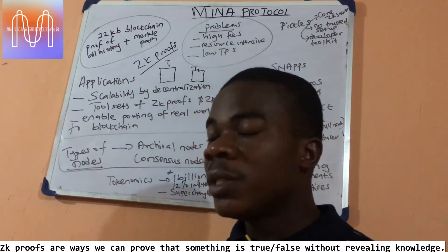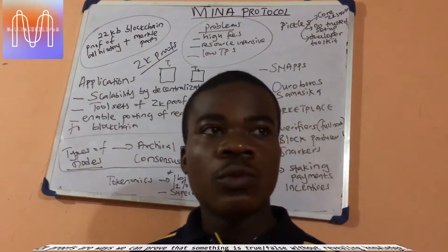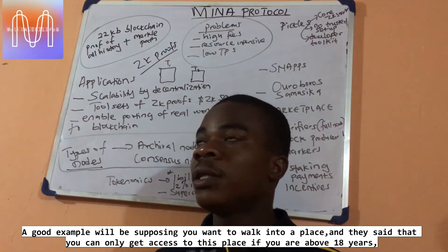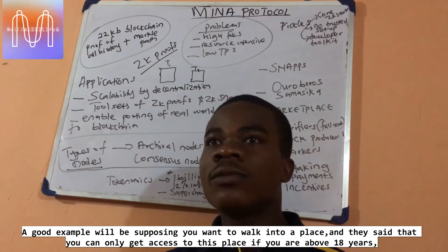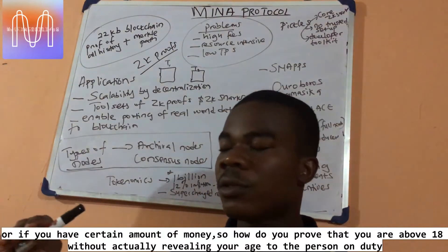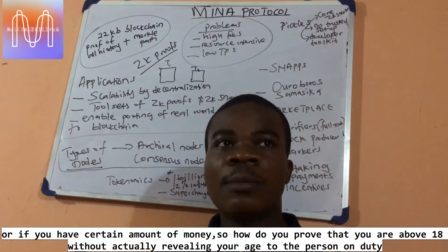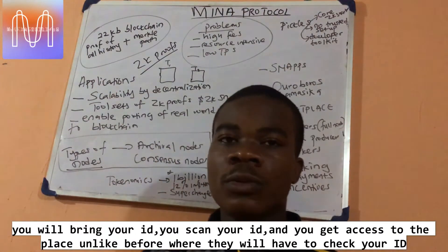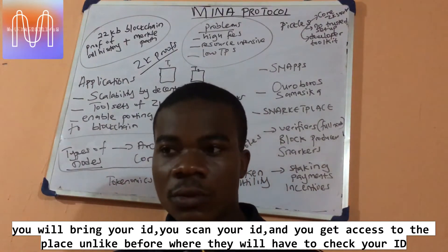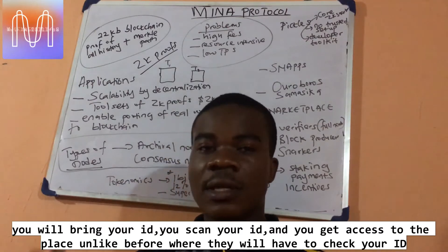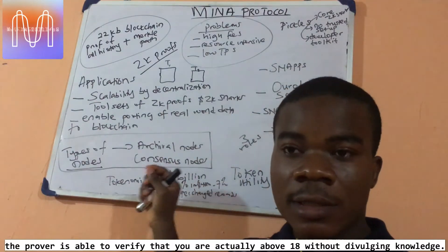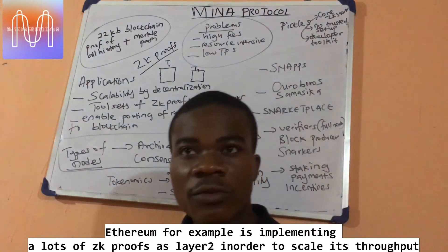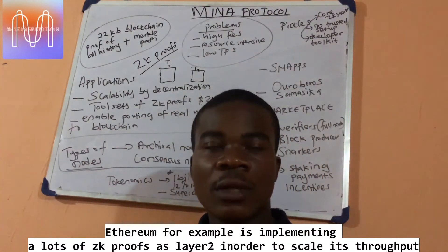ZK proofs are a way to prove that something is true without revealing the underlying knowledge. A good example: suppose you want to walk into a place and they say you can only get access if you are above 18 or have a certain amount of money in your account. How do you prove you're above 18 without revealing your exact age? You bring your ID, they scan it, and you get access. The system is able to verify that you are above 18 without you having to divulge your actual details.